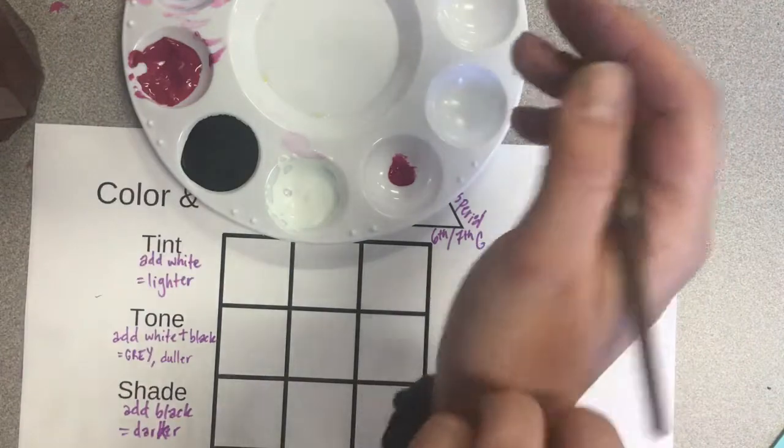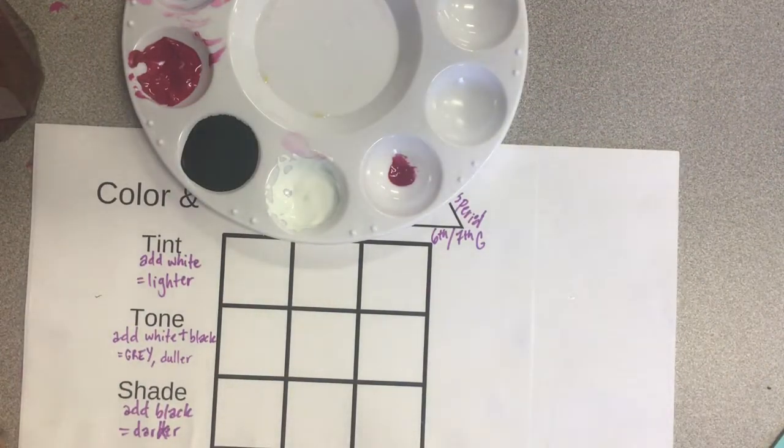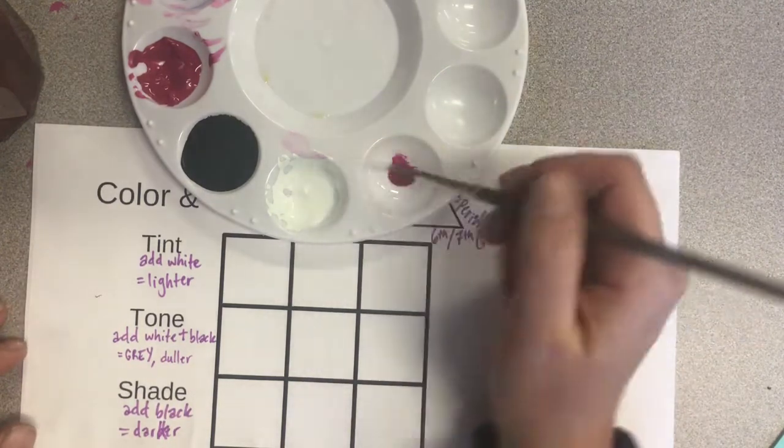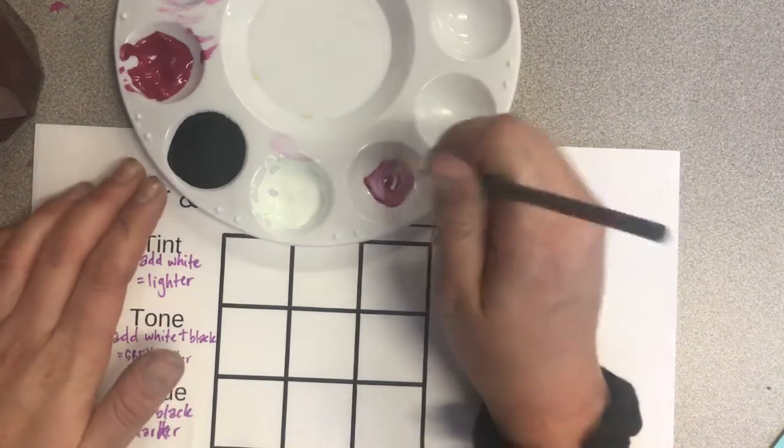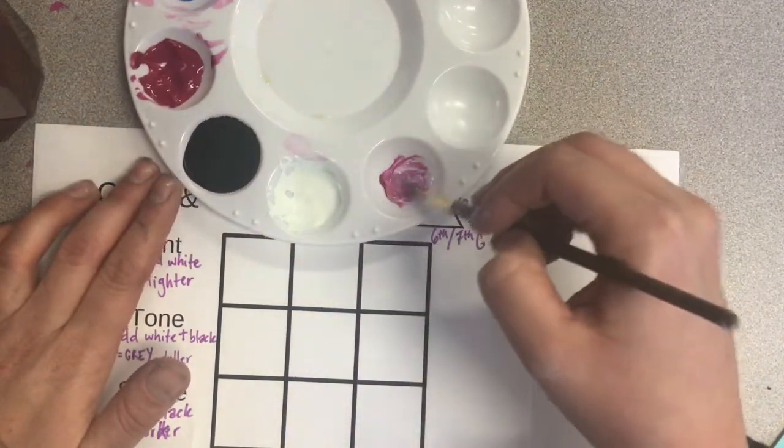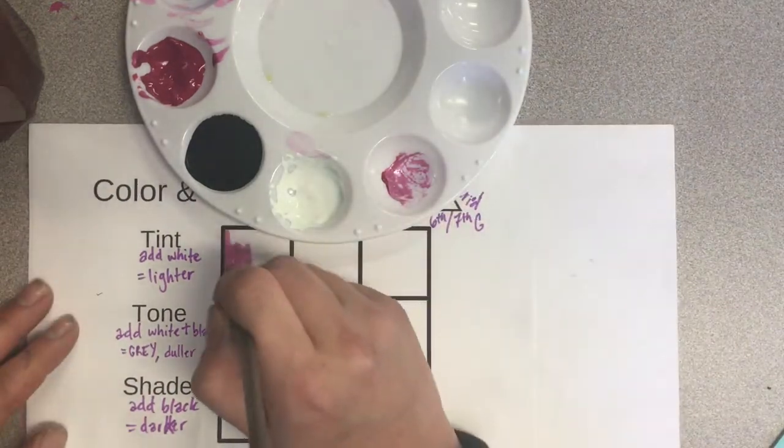If you're Bob Ross, you can smack it on the easel, but we are not Bob Ross in here, so we're going to use a paper towel. Then I'm going to add a little bit of white and mix them together. You're going to mix it all the way, and remember you're using just the tip of the brush. When I'm happy with that color, I'm going to paint it in this first section here.